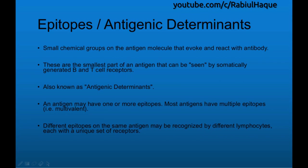The next feature is very important: epitopes. These are small chemical groups on the antigen molecule that evoke and react with antibody. They are also known as antigenic determinants. These are the smallest part of an antigen that can be seen by somatically generated B and T cell receptors. We will talk about B and T cell receptors in detail in our upcoming lectures of the immunology series.